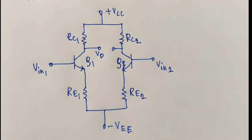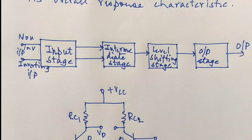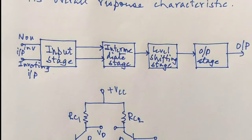In the intermediate stage, another differential amplifier is used, driven by the output of the first input stage. In most amplifiers the intermediate stage is a dual input unbalanced, that is single-ended output. Because direct coupling is used, the DC voltage at the output of the intermediate stage is well above ground potential. Therefore, a level shifting stage — the third stage — is used after the intermediate stage to shift the DC level at the output downward to zero with respect to ground.